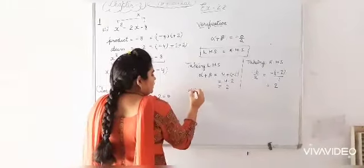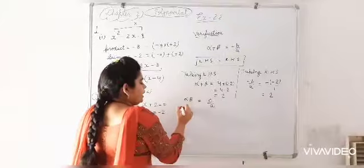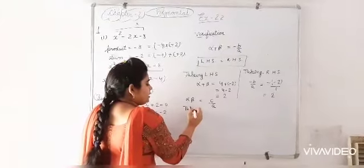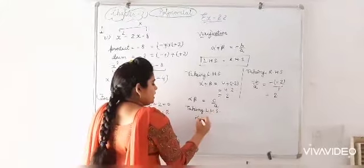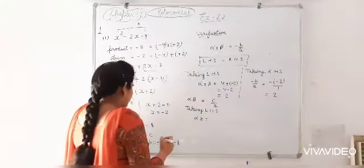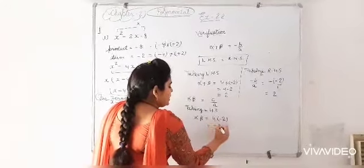Now for alpha beta, it is equal to c by a. Again taking left hand side. Left hand side means alpha beta. It is equal to 4 into minus 2. Means minus 8.